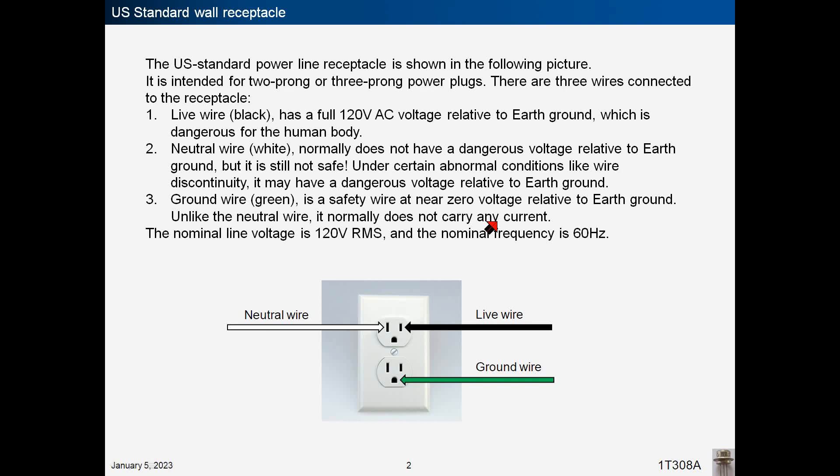The first is the black live wire, which has a full 120 volts AC relative to earth ground, which is dangerous for the human body.